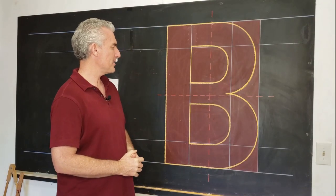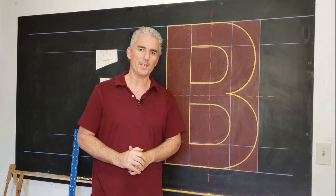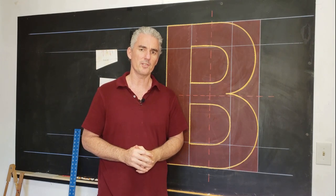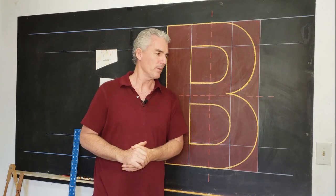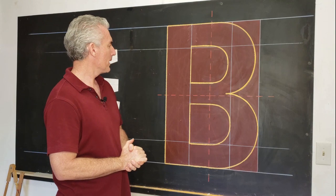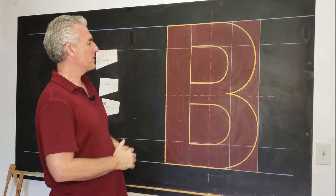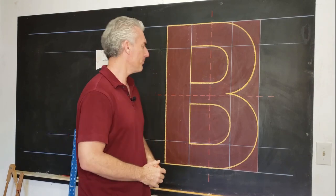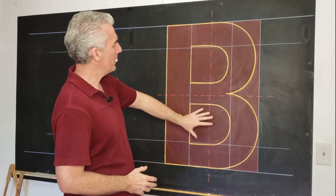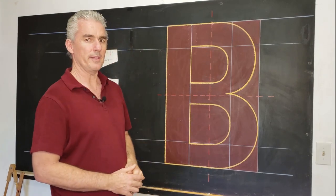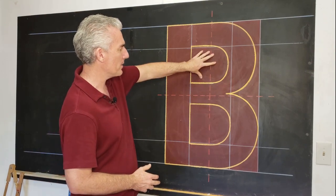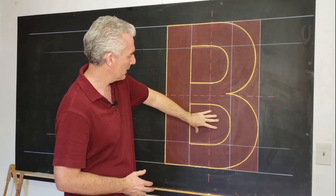So the B is one of those letters that we had a bit of a study of earlier on. There's a few tweaks and nuances that we do to this B to make it the beautiful thing that it is. So let's have a bit of an overview before we start. The main thing is the top section of our B should be physically smaller than the bottom section. So that means this counter is going to be physically smaller than this counter.